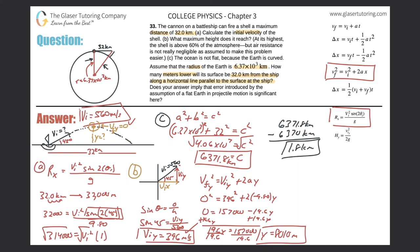So the shell would have gone about 1.8 kilometers lower due to earth's curvature. The question asks whether this error — introduced by assuming a flat earth in projectile motion — is significant. We can say it probably won't make a significant difference. Thanks for tuning in, hope that helped, please remember to subscribe.